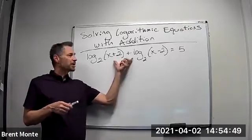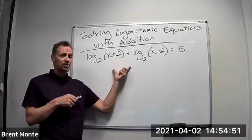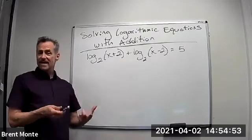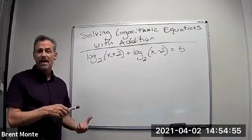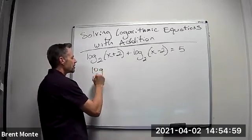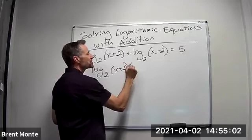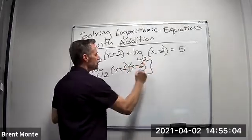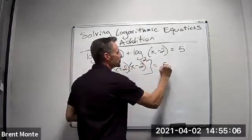So the first thing I do is I use my log property that says if I'm adding two logs at the same base, I can write it as a single log with that same base by multiplying the arguments together. So I'm going to get log base 2 of (x+2) times (x-2) equals 5.